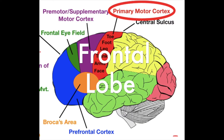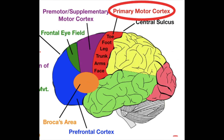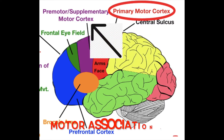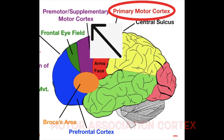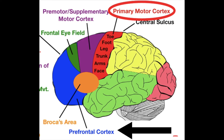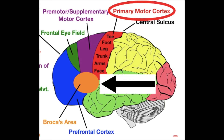Moving on to the frontal lobe. There are five main areas you need to know. Number one is the primary motor cortex. Number two is the motor association cortex, which includes the pre-motor cortex and the supplementary motor cortex. Number three is the frontal eye field. Number four is the pre-frontal cortex. And finally, number five is Broca's area.